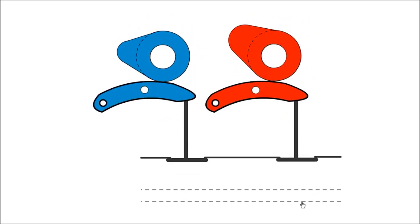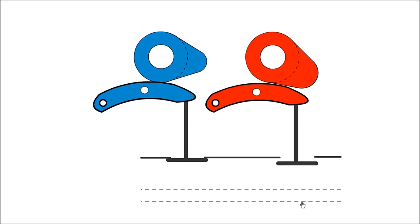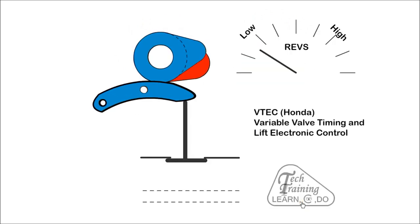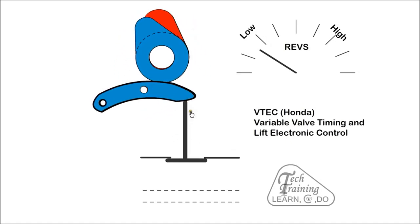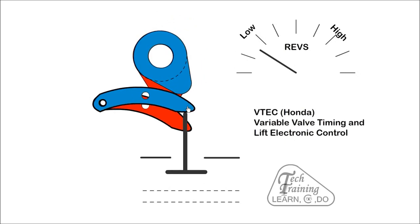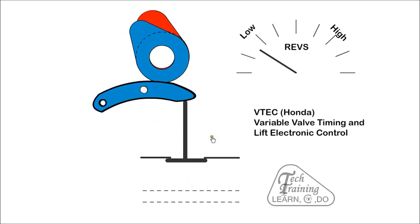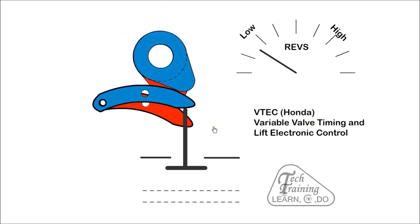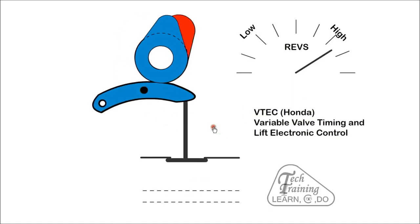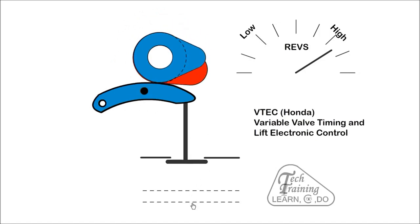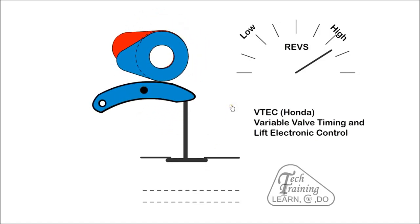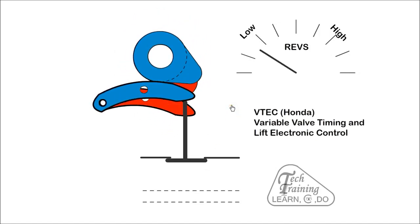With VTEC, the camshaft has two separate lobe profiles. The valve is in contact with the blue rocker arm. At low speed, the cam operates on the standard profile for efficiency, and at high speed, the pin is activated by oil and the rockers are joined together when they are aligned, thus altering the timing and lift for maximum power. At low speed, we again return to the economy cam.